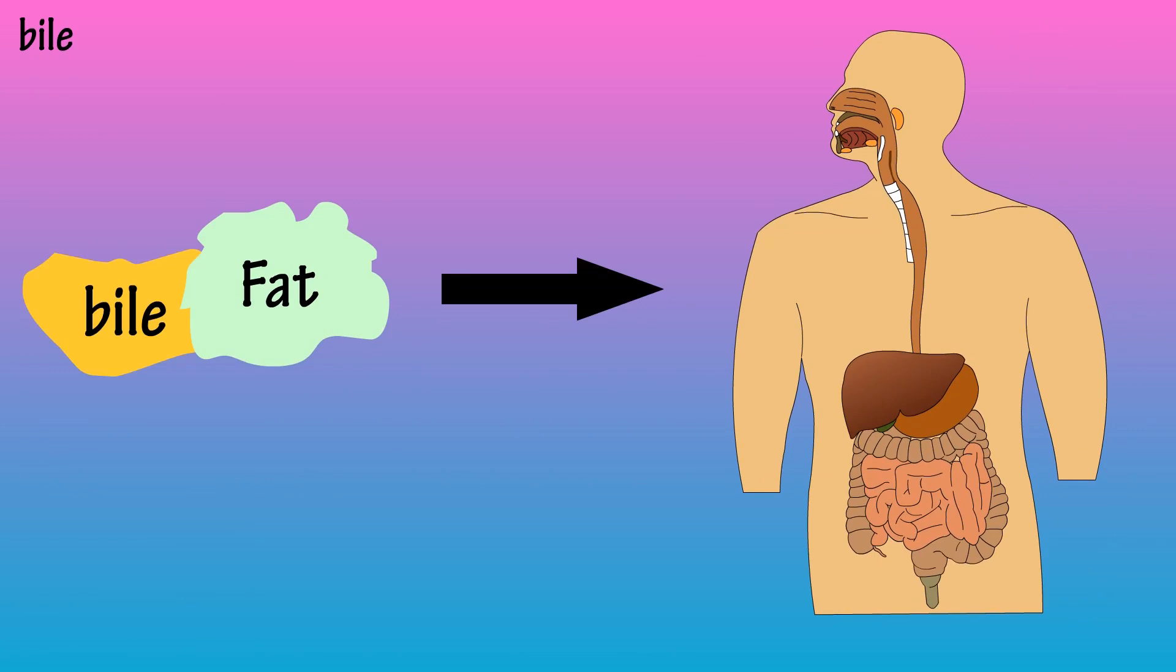So as you can see, bile has a very important role in fat digestion and absorption, but bile does a couple of other things as well.